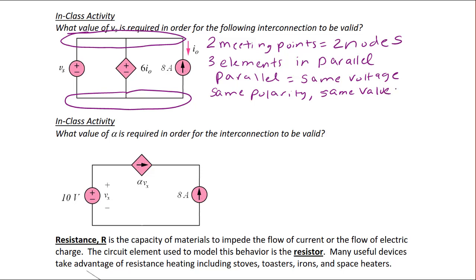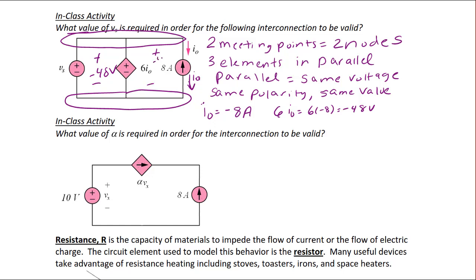First we find I naught. Since I naught points down and the eight amp current source points up, I naught will have a value of negative eight amps. So six I naught equals six times negative eight, which equals negative 48 volts, representing the value of the current controlled voltage source — positive on top, negative on bottom, negative 48 volts. That means all three elements are positive on top, negative on the bottom, negative 48 volts. So VS is also negative 48 volts, which makes this circuit have a valid interconnection.